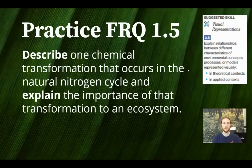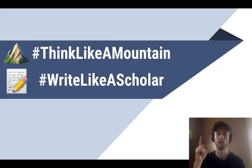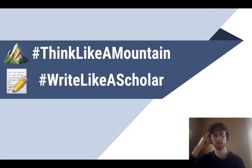For the FRQ for topic 1.5 today, we're going to be looking at explaining the relationships between different characteristics of an environmental concept. Try to describe one chemical transformation that occurs in the natural nitrogen cycle, and then explain the importance of that transformation to an ecosystem. Thanks for tuning in today — don't forget to like this video if it was helpful, subscribe for future APES video updates, and check out the other notes over to the side. And as always, think like a mountain, write like a scholar.